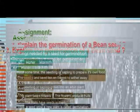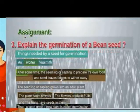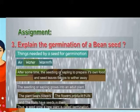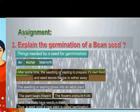After some time, the seedling begins to prepare its own food and starts to grow further. The seedling grows into an early plant. The plant bears flowers. The flowers produce fruits, and the fruits have seeds in them. Thus, a seed growing into a new plant is called germination.